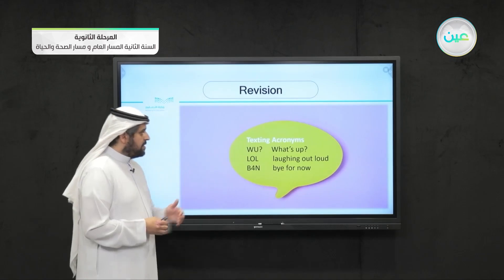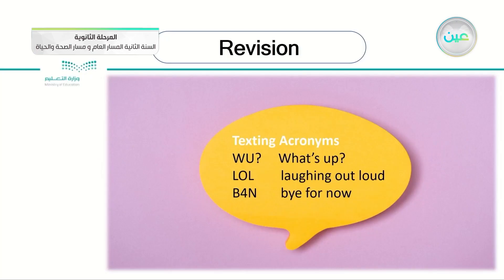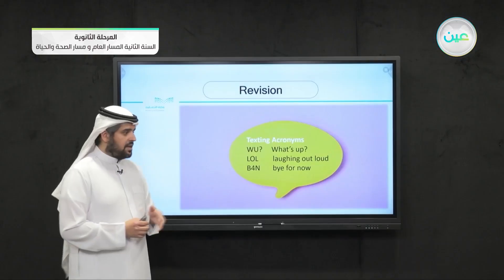Again, texting acronyms: W-U is for 'what's up' — we take the first letter. L-O-L — laughing out loud. B-F-N — bye for now. Notice that the word 'for' — we didn't take the first letter. Instead, we put the number 4.